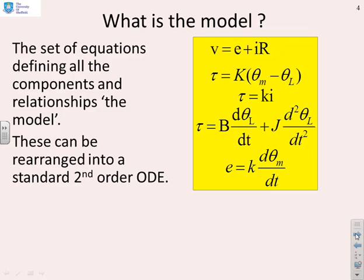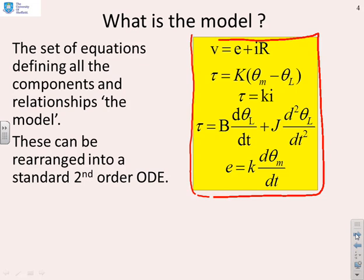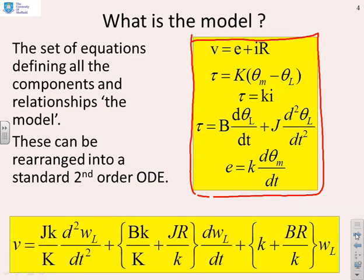So what's the model? In the previous video we showed with basic assumptions you get these five equations. And if you simplify and rearrange all those equations, you end up with a second order model of the form here. So a basic DC servo with a flexible shaft has second order dynamics.